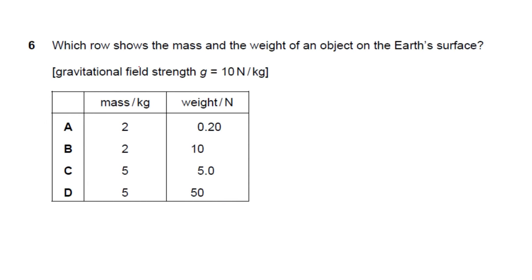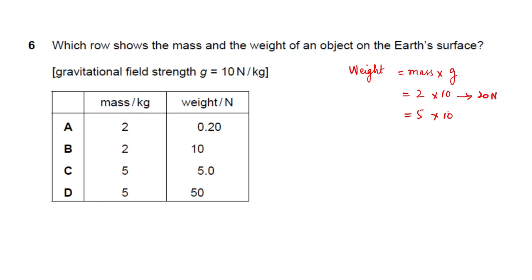Question 6: weight on the Earth's surface equals mass times g (gravitational field strength, 10 N/kg). For a mass of 2 kg, weight = 20 N. For a mass of 5 kg, weight = 50 N. Checking the options: mass 2 with weight 20 — no; mass 5 with weight 50 — yes. The answer is that row.